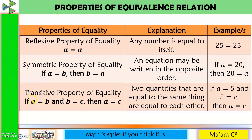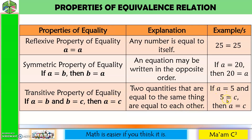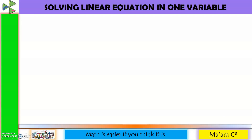The last one is the transitive property of equality. For example, if A equals 5 and 5 equals C, then A equals C. Let us start solving.